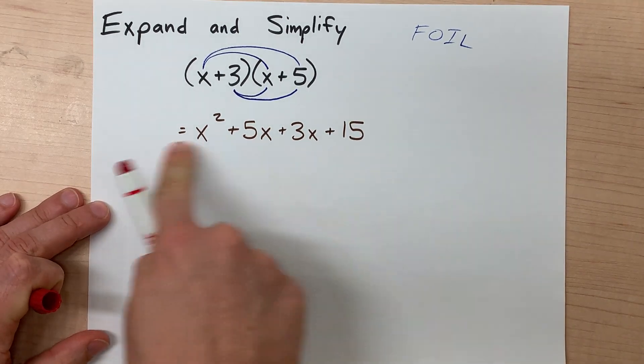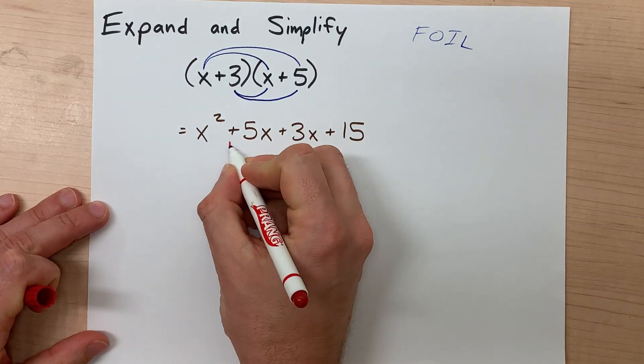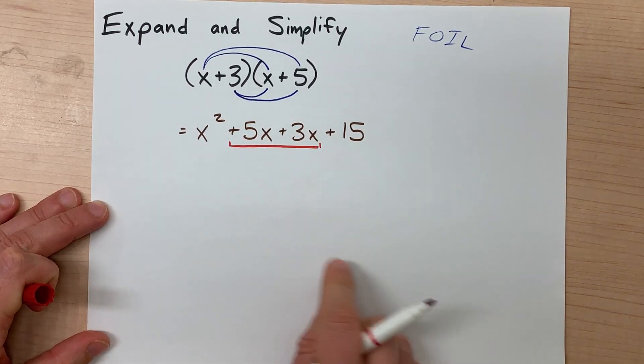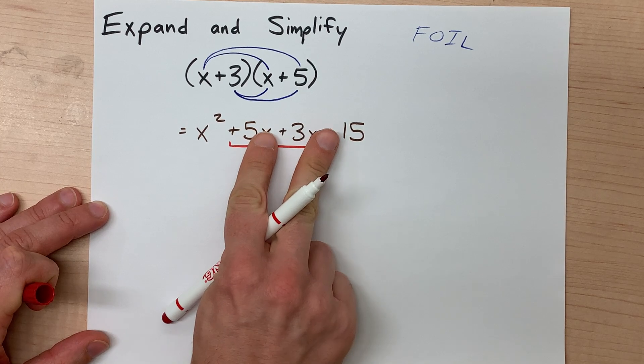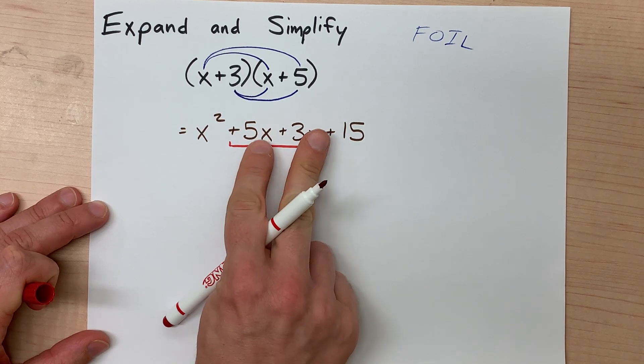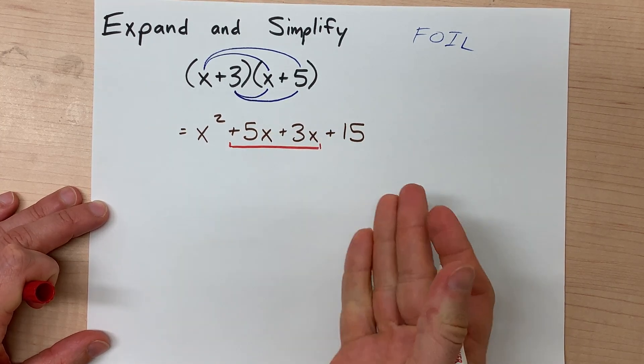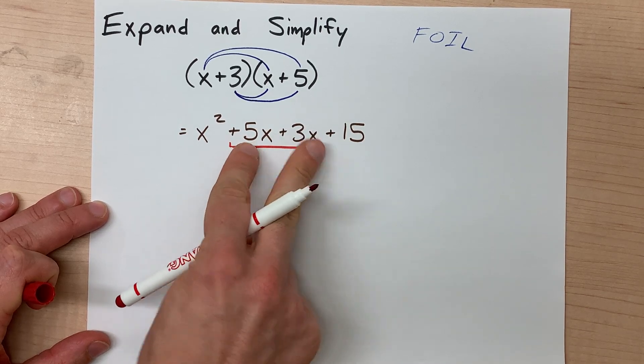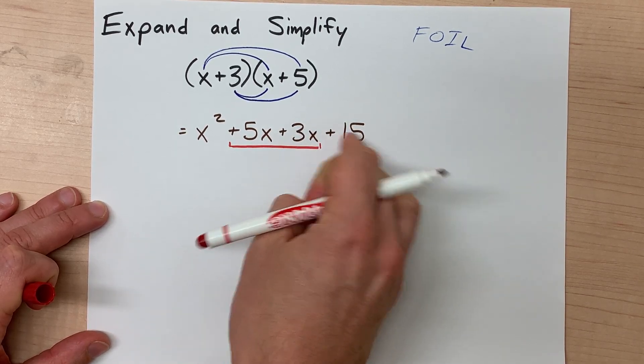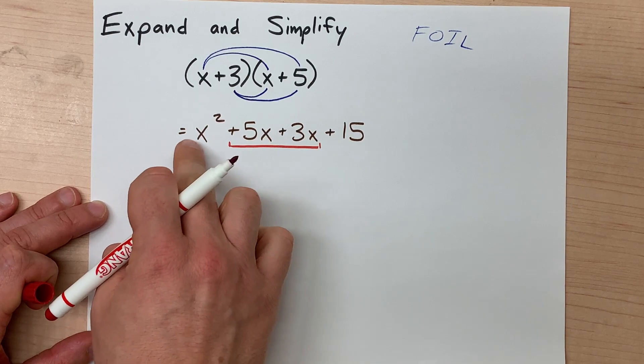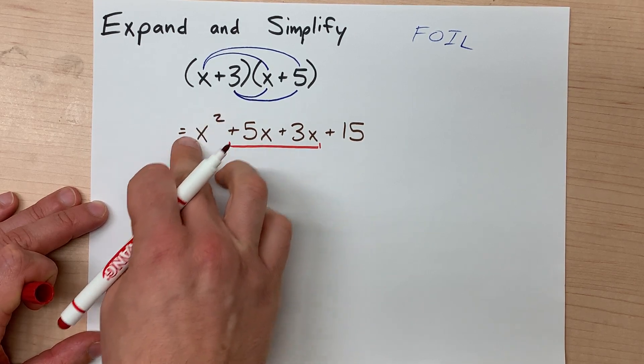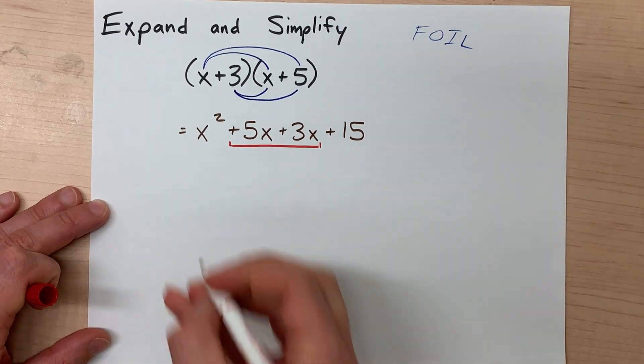Now the only two terms here that are similar to each other, or like, are these two. They both have x, and they have the same power. Now there is no power written here, but that makes them the same. It makes these different from this one, which doesn't have an x on it, and different from this one, which has an exponent of 2 on the x.